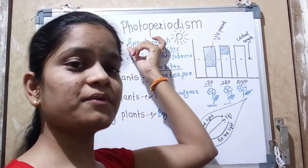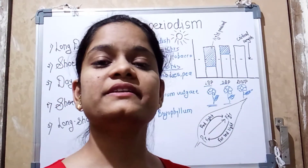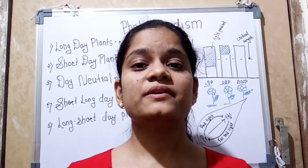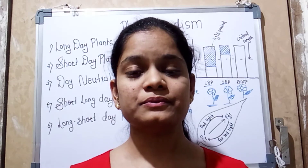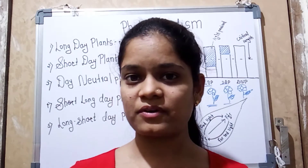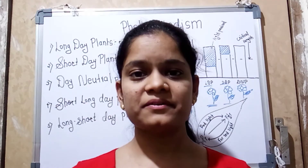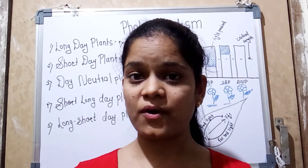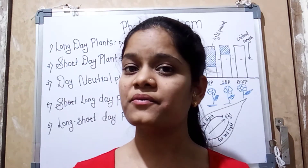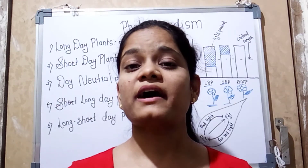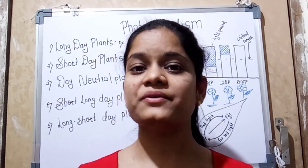Photoperiodism. 'Photo' means light and 'period' means length of time. Photoperiodism is the reaction of plants and animals to the length of day and night. It means the plant induces its flowering in response to the length of day and night duration. The plant consists of a special type of photoreceptor proteins called phytochrome.